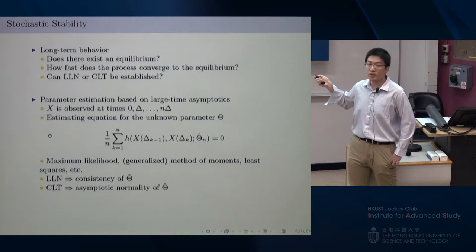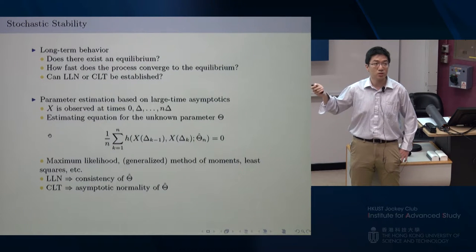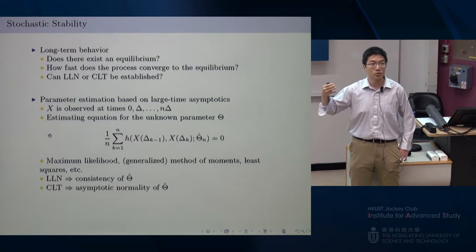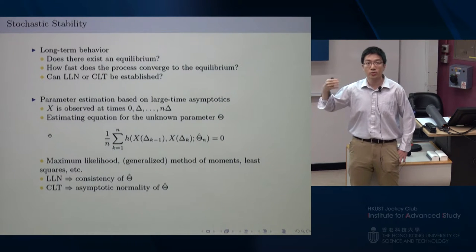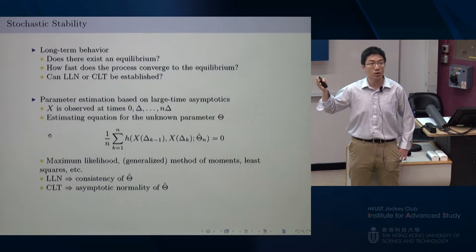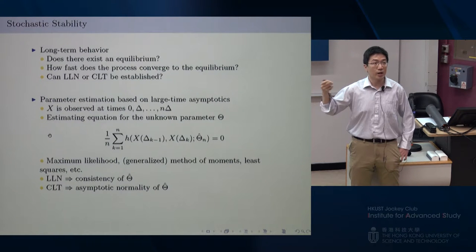Similarly, if you want to construct confidence intervals or measure estimation error, you need a central limit theorem. Looking at the existing literature for all these methods, when they try to prove consistency or asymptotic normality of their parameter estimators, many of them assume that the process they are estimating is ergodic — that is, they always assume the process is stable.